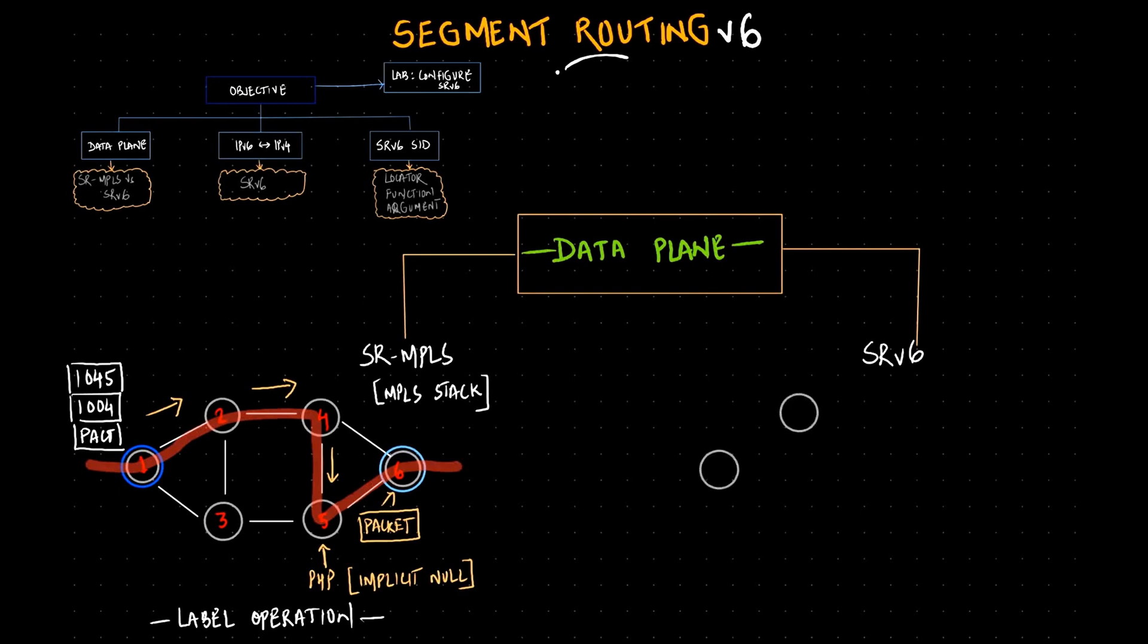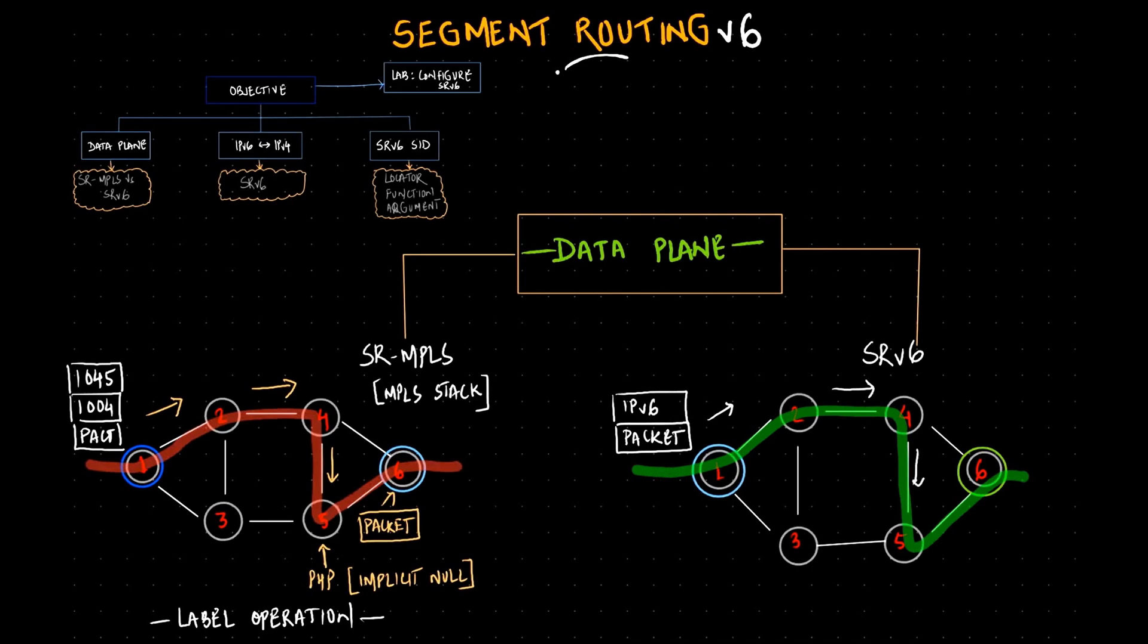But when we talk about SRv6, rather than using a label we are using an IPv6 header. Based on that IPv6 header destination address the packet will be routed across the network. Again the same path will go from one, two, three, one, two, four, five, six. Based on that we'll have a packet which will get encapsulated with an IPv6 header.